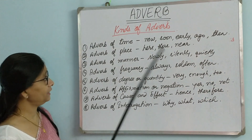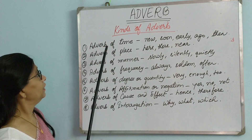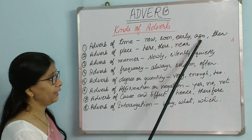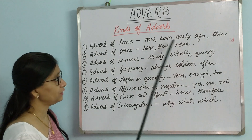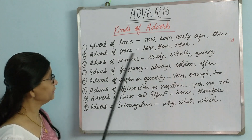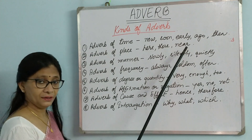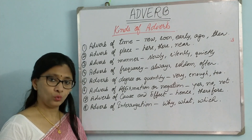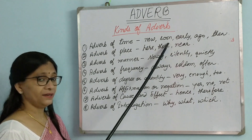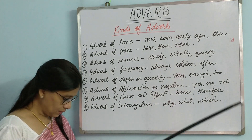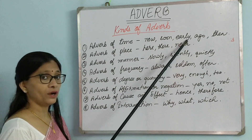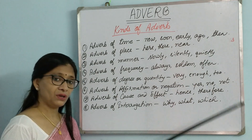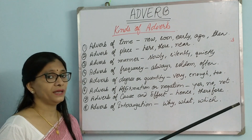Now let us quickly see the kinds of adverbs. Adverb of time will have words like now, soon, early, ago, then. For example: 'I shall come back soon' — 'soon' is an adverb of time. 'She got up early.' 'He came yesterday.' Words like yesterday, tomorrow, and today all signify time, so they are adverbs of time. Adverb of place includes words like here, there, near.